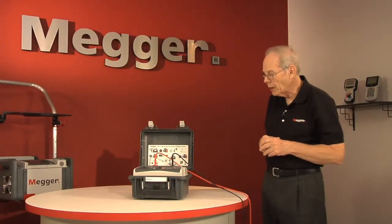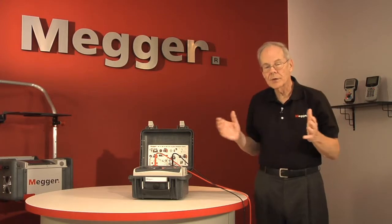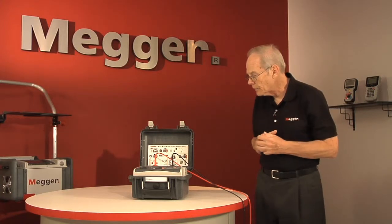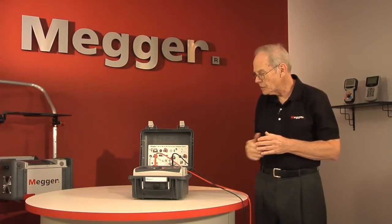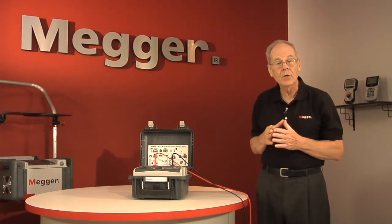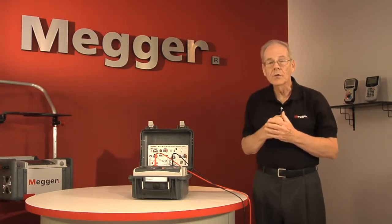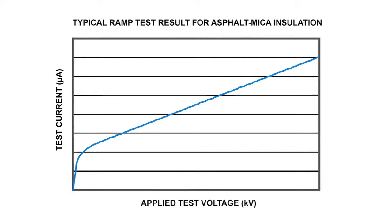At this point, the operator is essentially done, other than for observation, for the duration of the test. The tester does everything automatically, gradually increasing the voltage at a steady rate up to the selected limit.